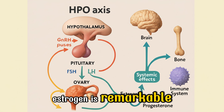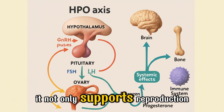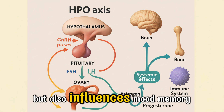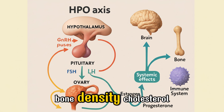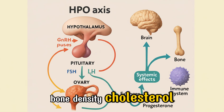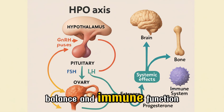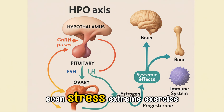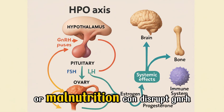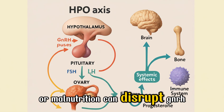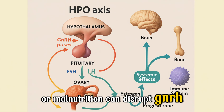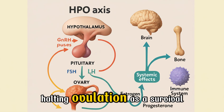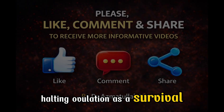Estrogen is remarkable — it not only supports reproduction but also influences mood, memory, bone density, cholesterol balance, and immune function. Even stress, extreme exercise, or malnutrition can disrupt GnRH pulses, halting ovulation as a survival safeguard.